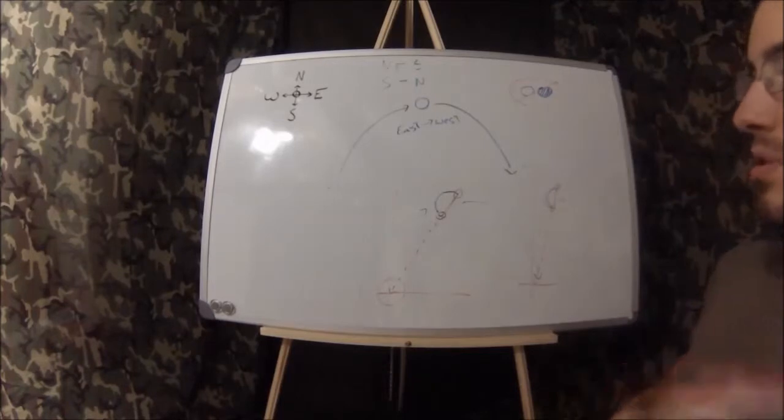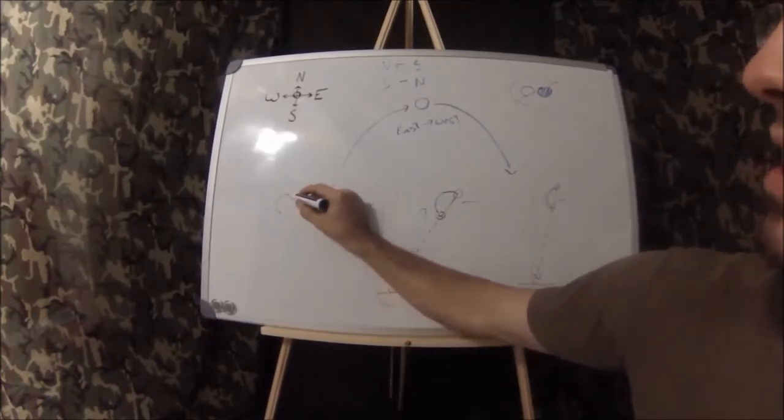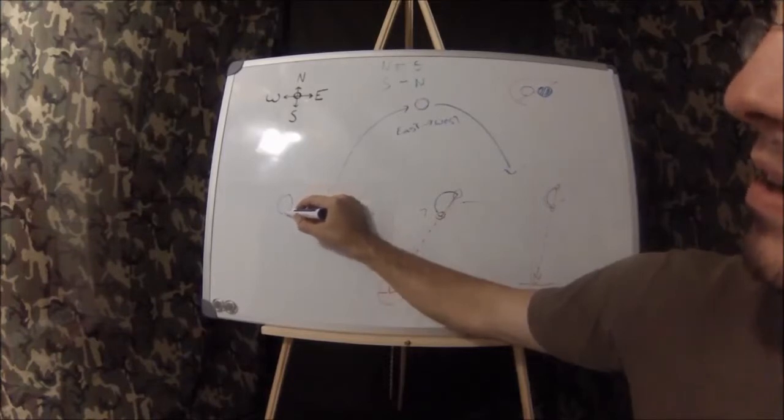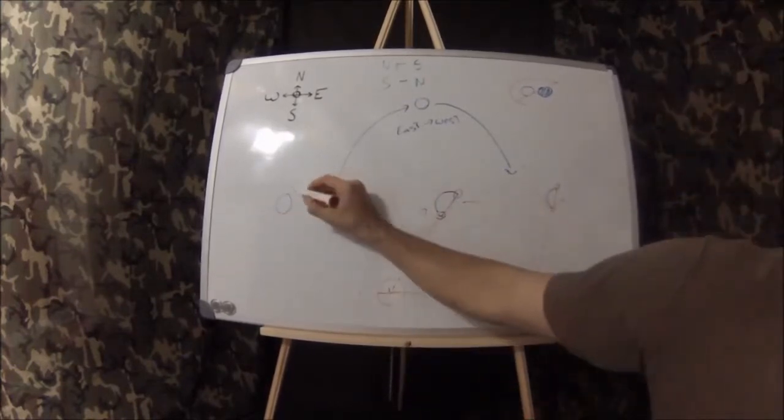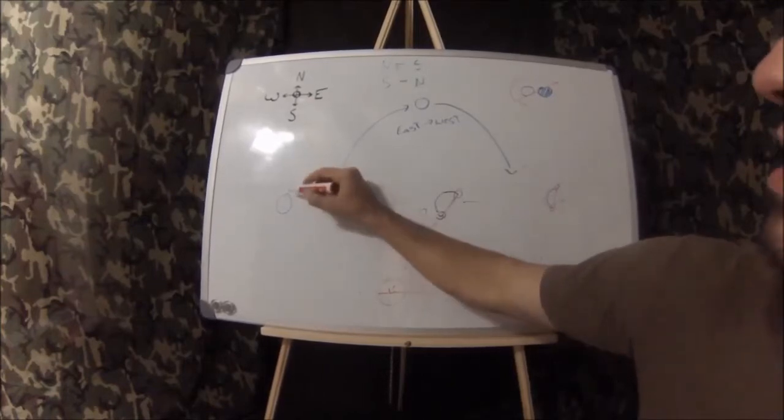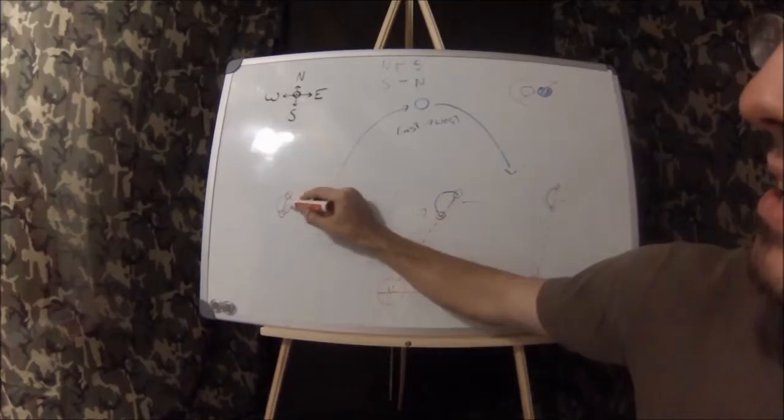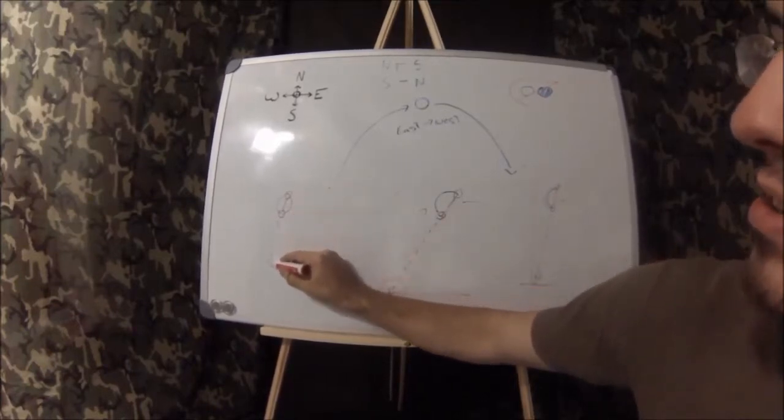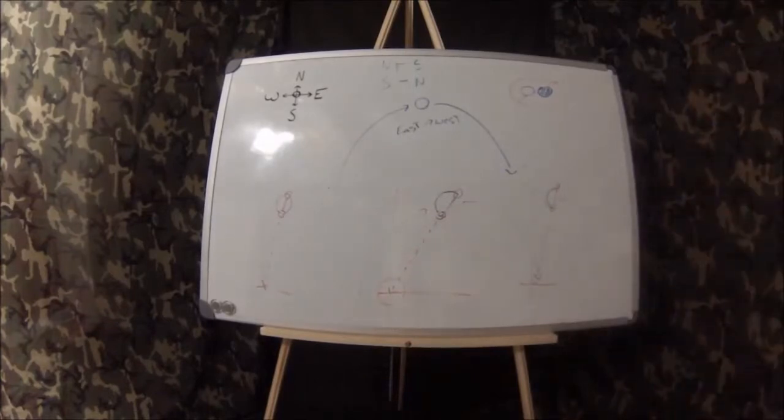We'll do one more example over here. We have the moon and it will be a three-quarter moon just like that. Once again we're going to take this point right here and this point, make that line, and we're going to follow it all the way to the horizon. That's going to be our point.